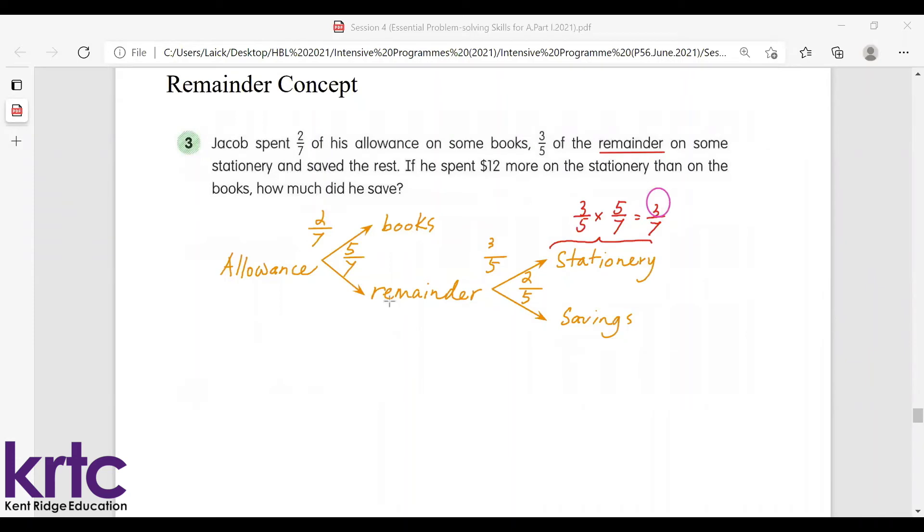Three units of the allowance spent on stationery and two units spent on books, the difference is one unit. So this one unit represents twelve dollars.